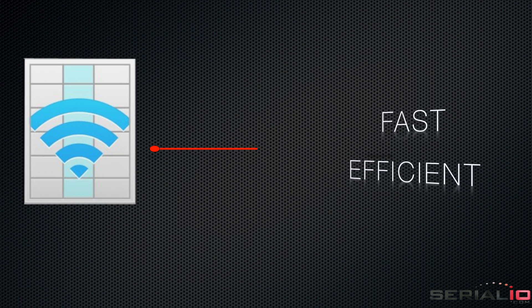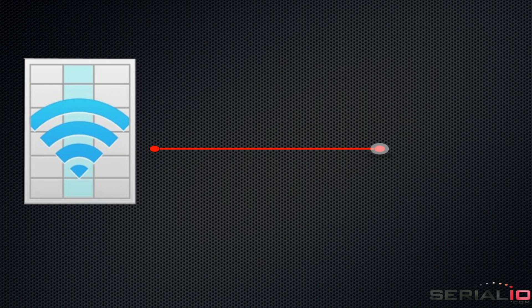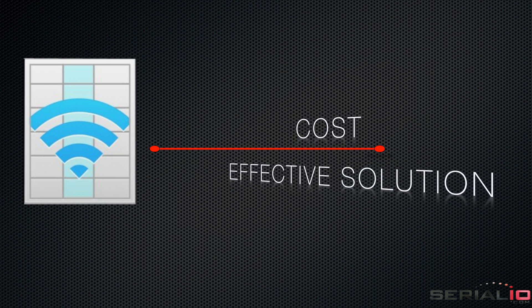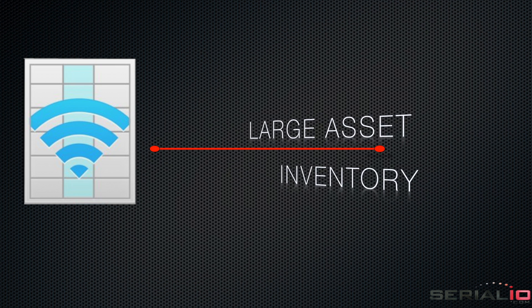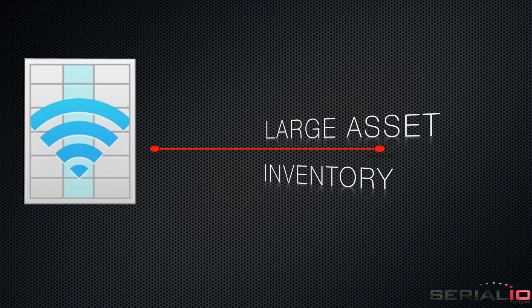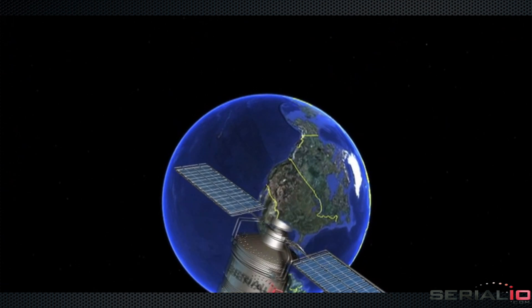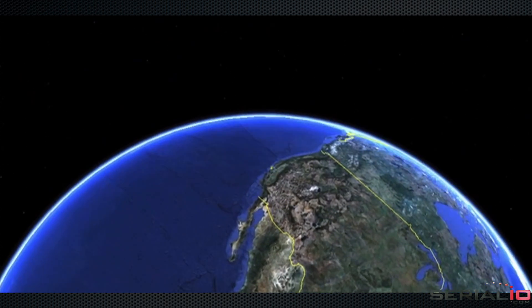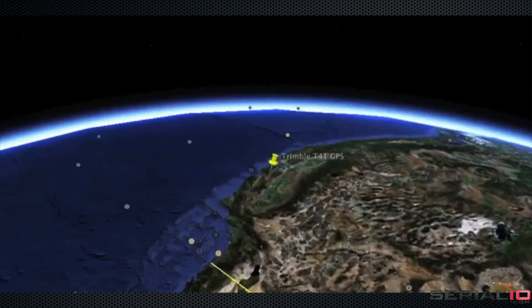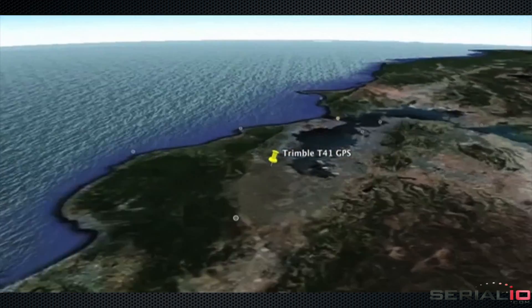Mobile Grid provides a fast, efficient, and cost-effective solution for large asset inventory. Results can be viewed on an inventory map with pinpoint GPS accuracy using a browser.